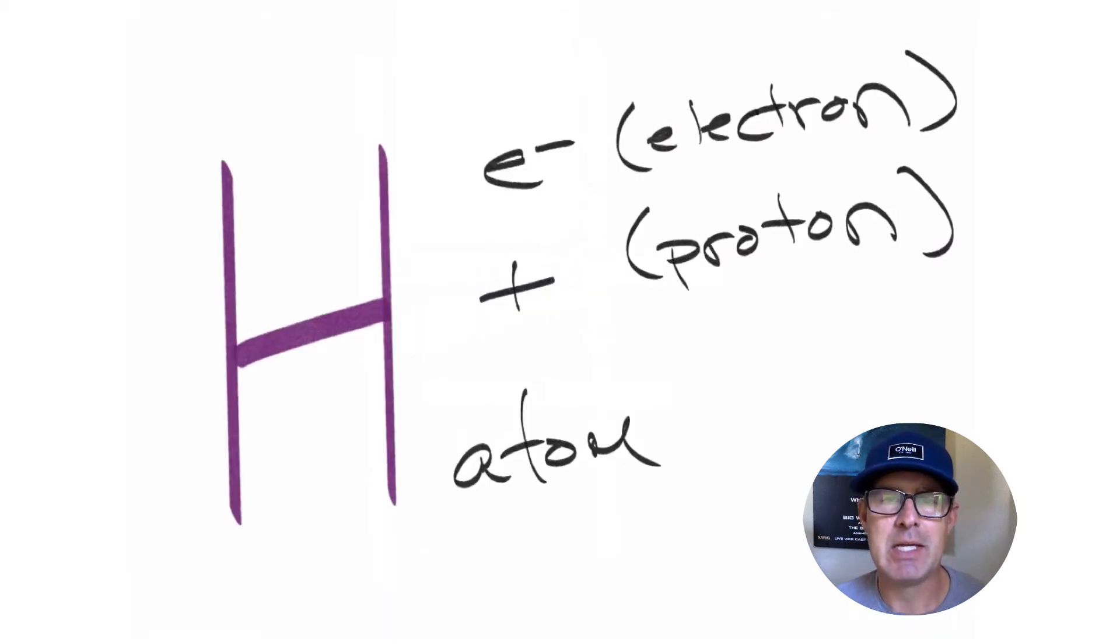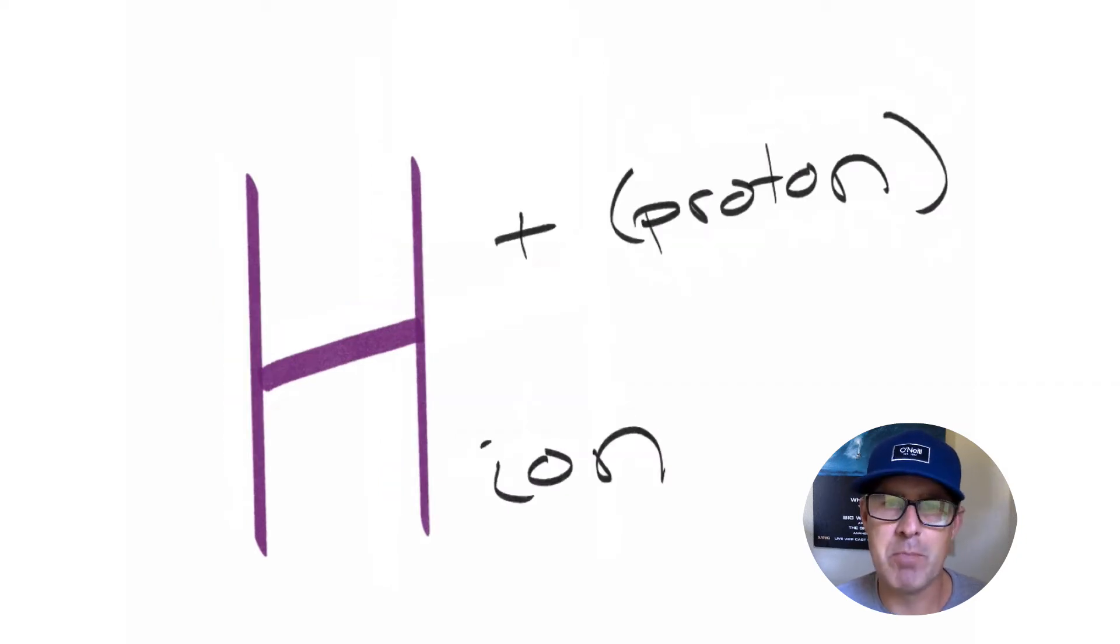First, let's look at the hydrogen atom. The hydrogen atom contains one electron and one proton. Those charges cancel each other out, which is why it's a neutral molecule. But if we lose an electron from the hydrogen atom, it becomes what's known as the hydrogen ion. It has no electrons and one proton.